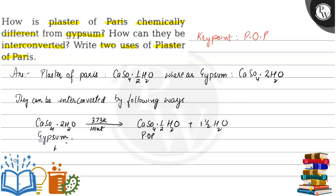Similarly, the other way around: if we take plaster of Paris and add one and a half water to it, it will change into gypsum.